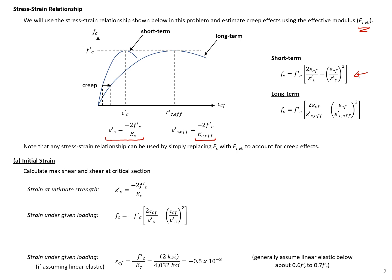For the first part of the example, we're finding the initial strain, which is short-term, so we don't need to use the effective modulus and we aren't accounting for creep. The first thing we'll do is find our strain at ultimate strength. Using this expression, it's 2 times F'c, which is 5 KSI, divided by EC, which was given as 4,032 KSI. This gives us a strain at ultimate equal to negative 2.48 times 10 to the negative third.